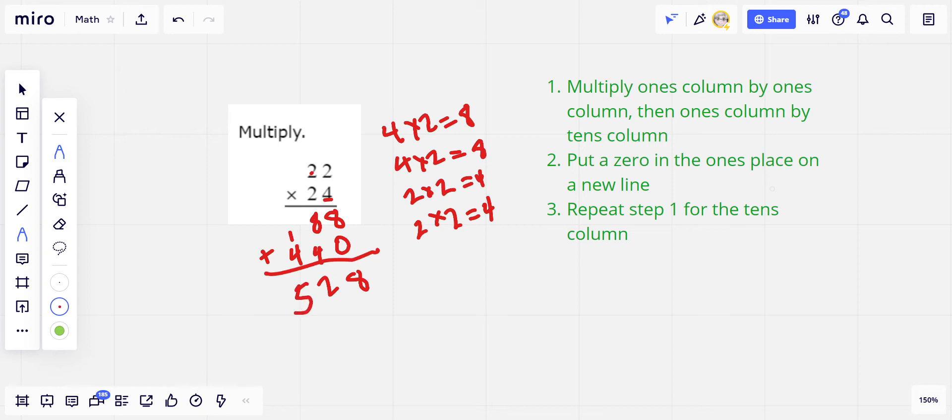So that is the traditional method that I learned when I was in school. Another way to think about this is to separate it into two problems. Think about 24 times 20 and 24 times 2.